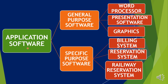Examples of General Purpose Software include word processor, presentation software, and graphics. Examples of Specific Purpose Software include billing system, reservation system, and railway reservation system.